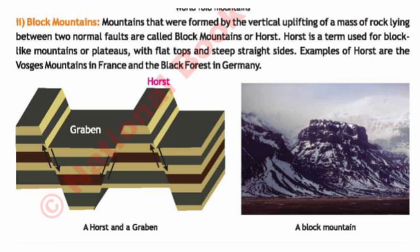Number two: Block Mountains. Mountains that were formed by the vertical uplifting of mass of rock lying between two normal faults are called block mountains or horst. Underline this line - it is important from an objective point of view. Horst is a term used for block-like mountains and plateaus with flat tops and steep straight sides. Examples of horst are the Vosges Mountains in France and the Black Forest in Germany - also important to note.